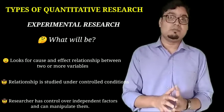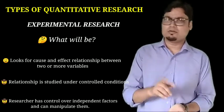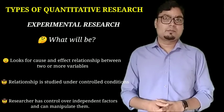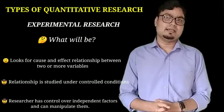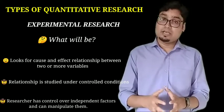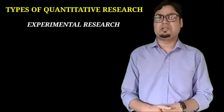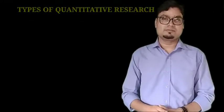The researcher can manipulate or control the situation and then look for results or consequences. For example, researches conducted in a lab are all experimental designs. In educational research, when looking for the effectiveness of a teaching module, we can use experimental research with a control group and an experimental group.